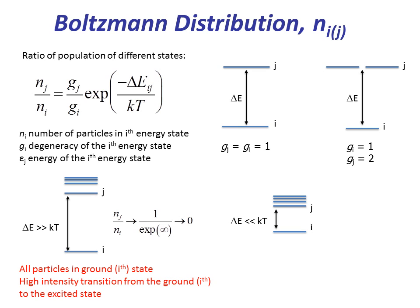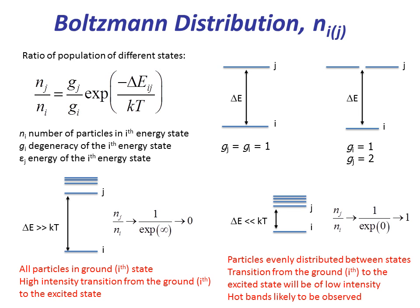Let's look into another scenario where delta E is much smaller than kT. Here the ratio would tend towards one, which would mean that particles are evenly distributed between states. As a result, the transition from the ground to the excited state will be of relatively lower intensity. And as you may recall from a previous lecture, in such a scenario, hot bands are likely to be observed due to transitions between the excited states.